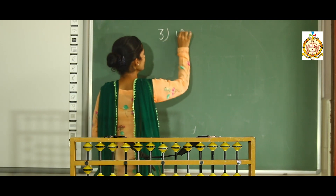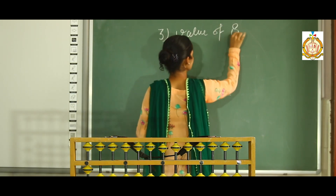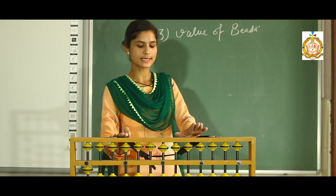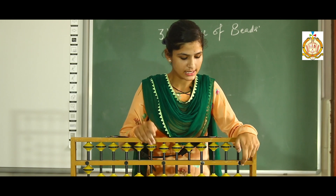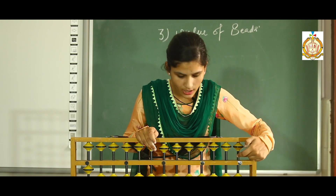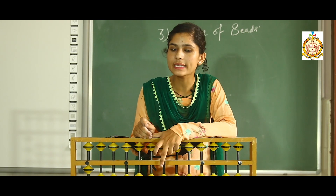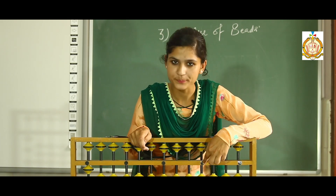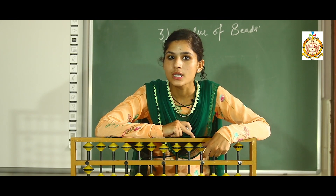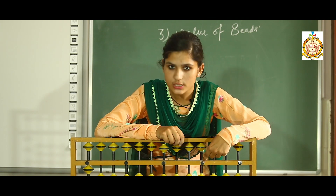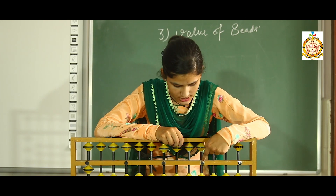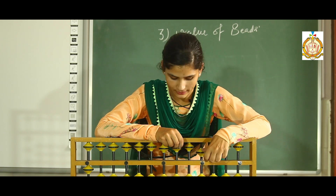Our third concept is the value of each bead. Looking at the Abacus scale — these dots are called unit dots and they indicate the place values, specifically the ones or unit place values. The unit dot upper bead value is 5. Always keep this in mind: unit dots indicate unit place values, and the unit bar upper bead value is 5.